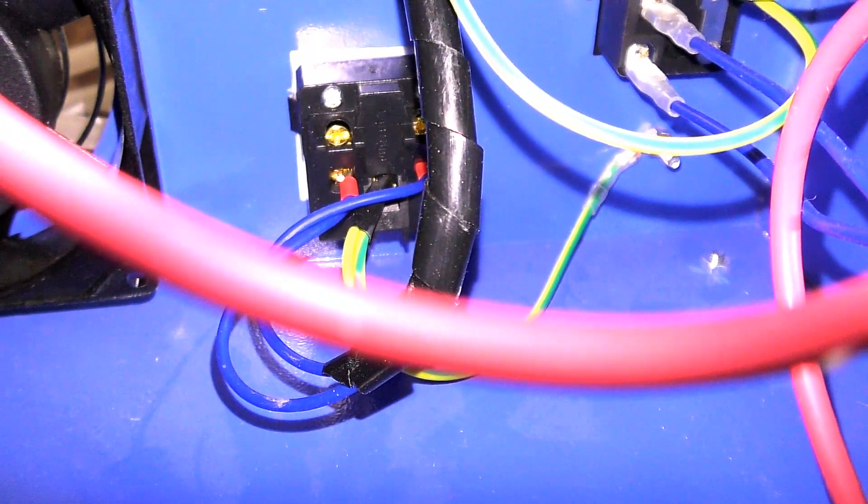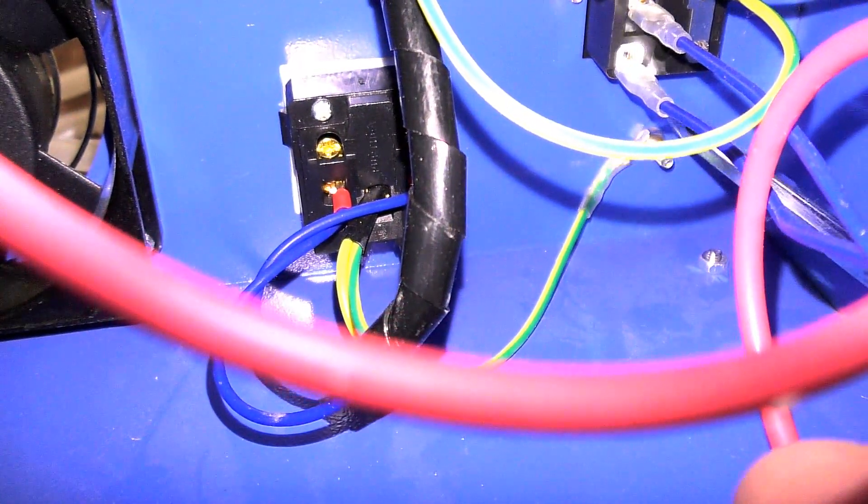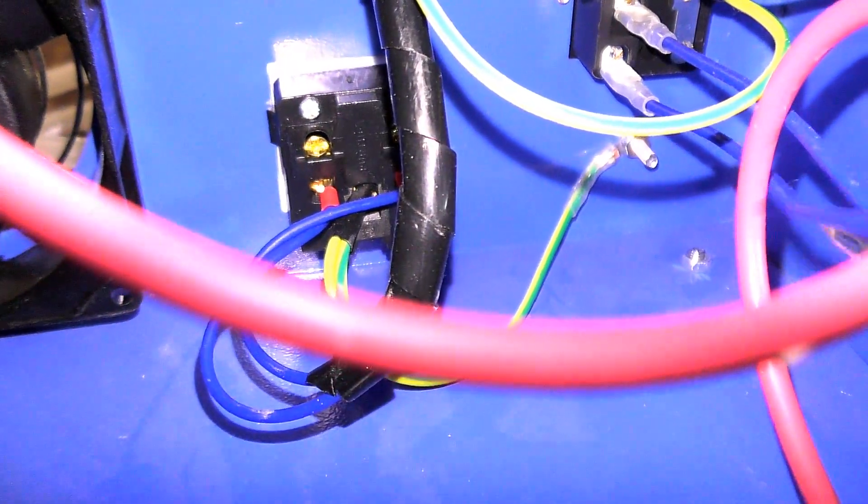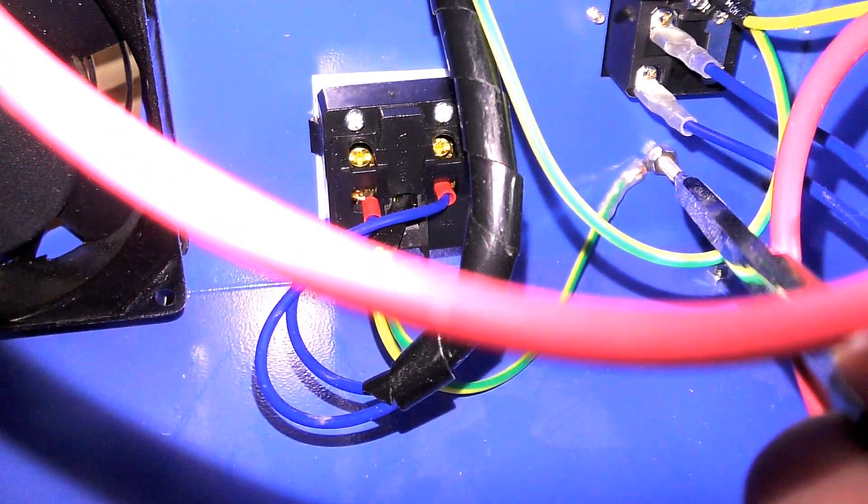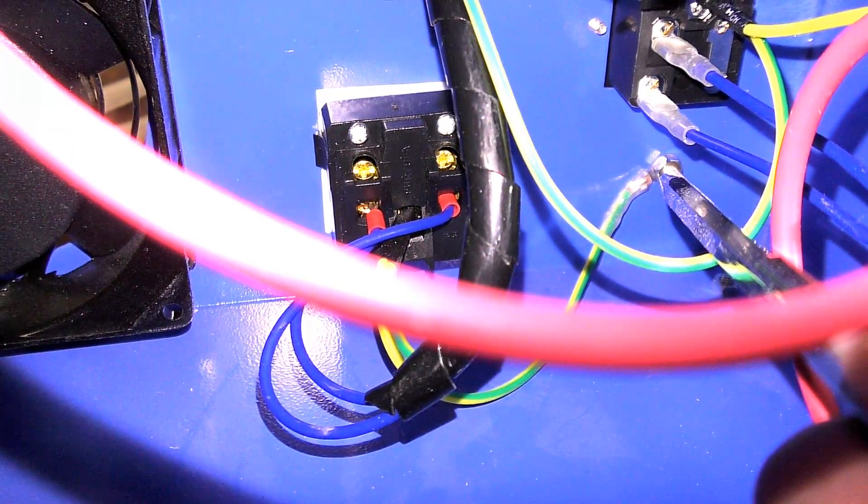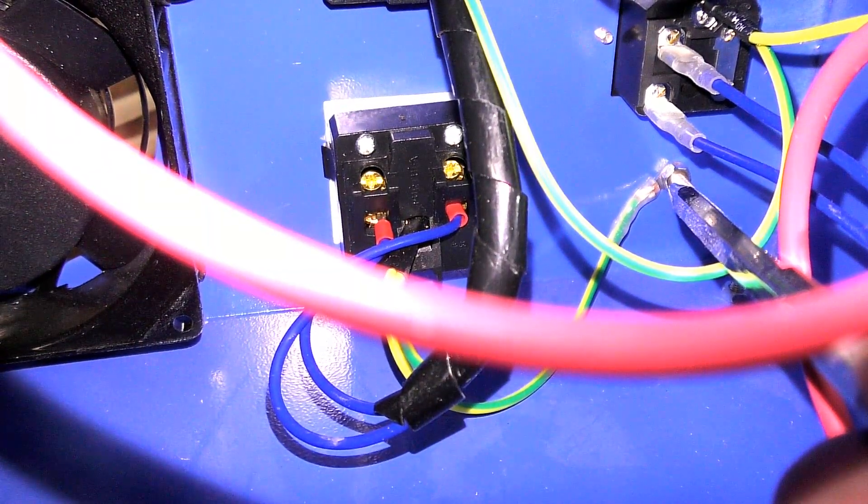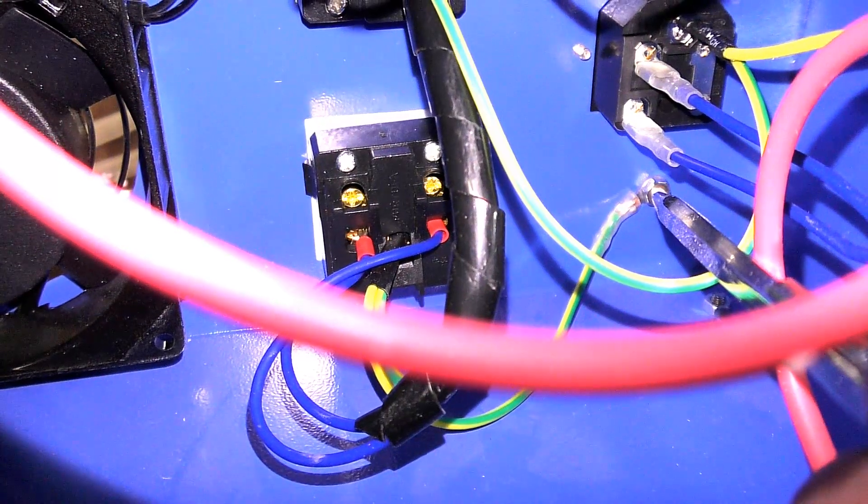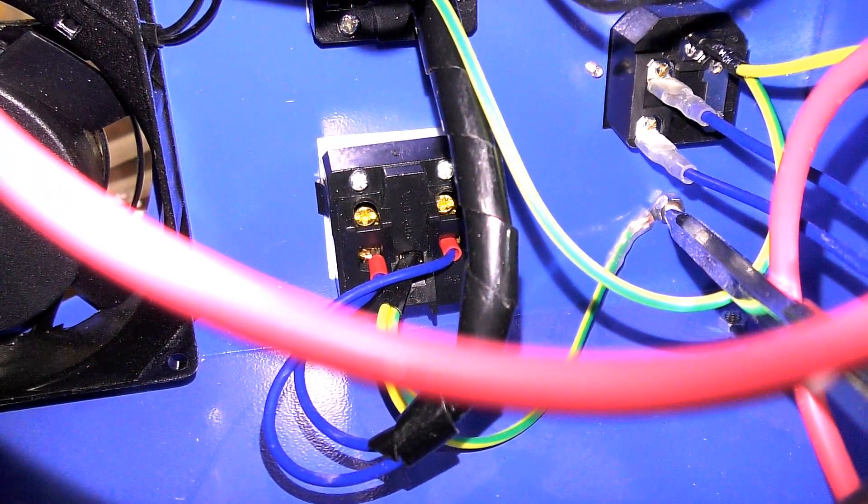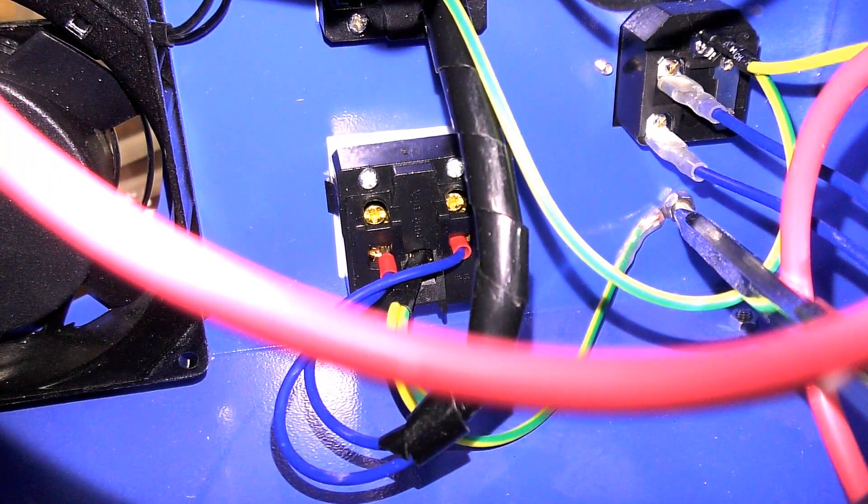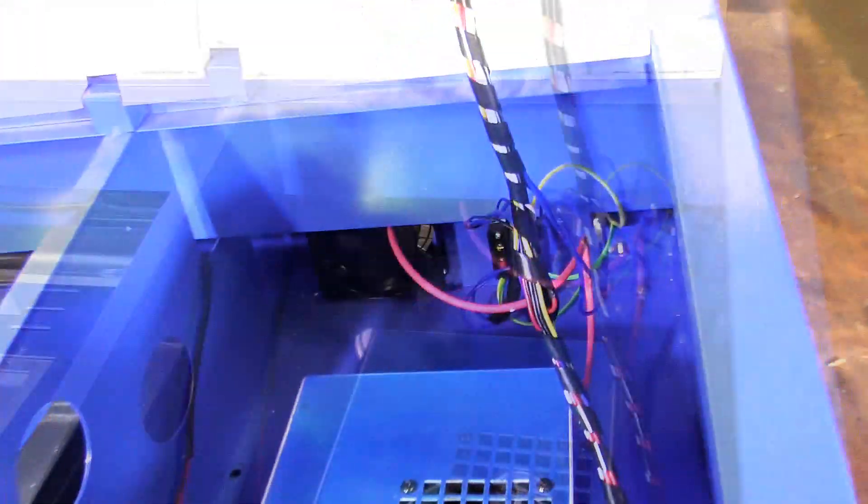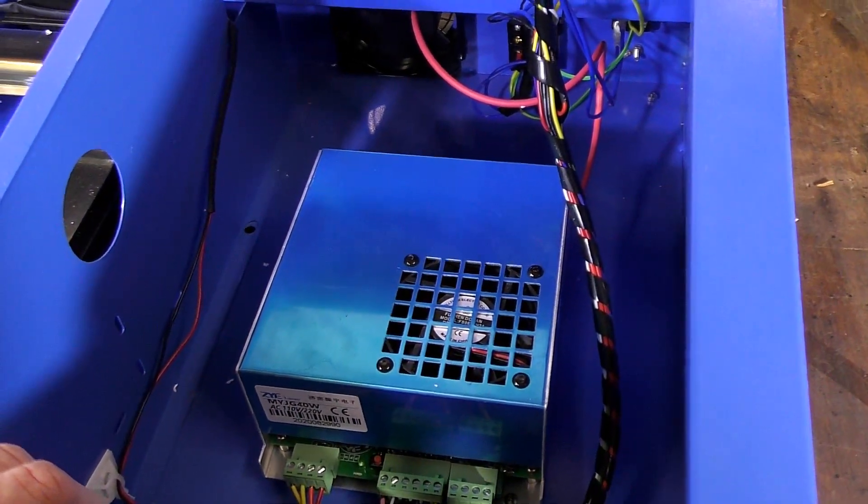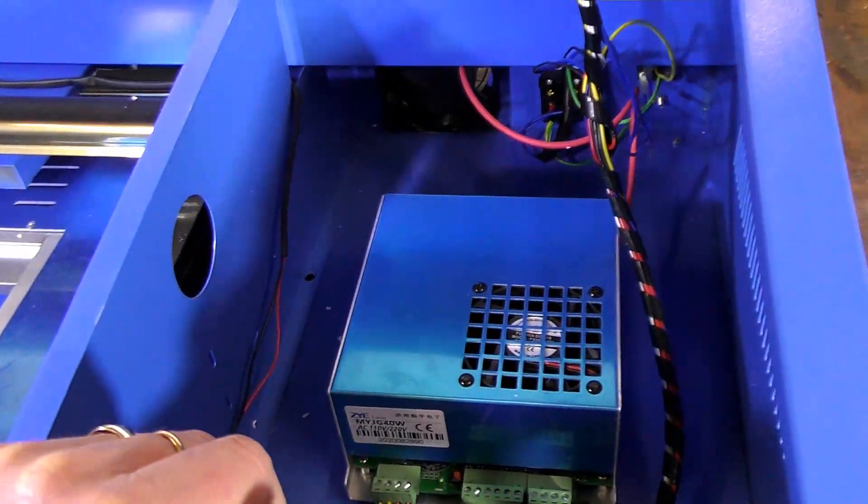That little screw there with a wire going to it, that is the main earth to the bodywork of this unit. And if you notice, it's done up or tightened up onto a painted panel. That is a serious bad earth situation.